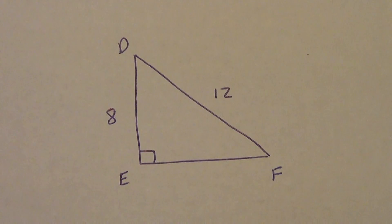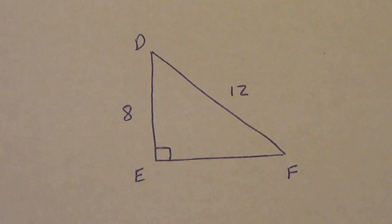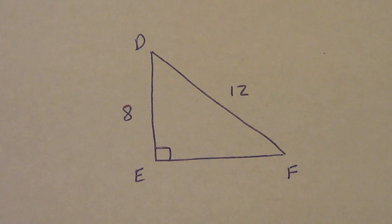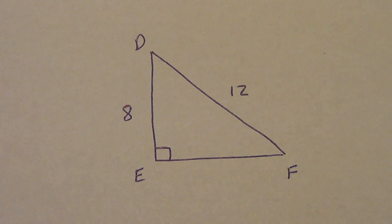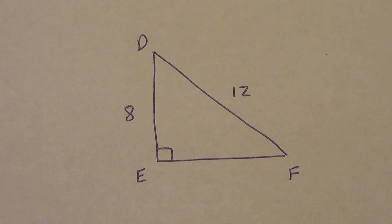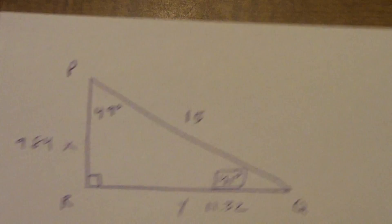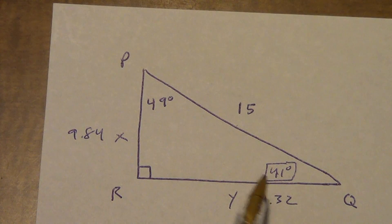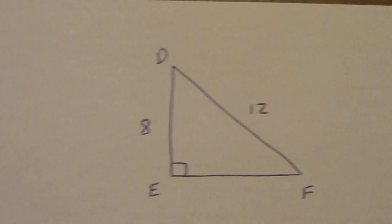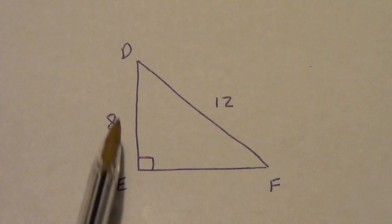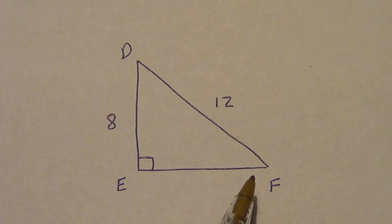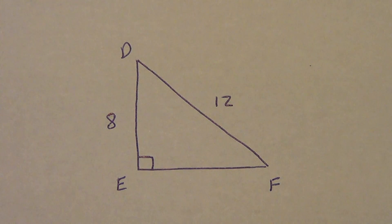Go ahead and copy down this next example, pause the video, and try it yourself. You're definitely going to be using inverse trigonometry on this one because you're trying to find the angles. Anytime you're trying to find angles and weren't given one to start with, you must use inverse trigonometry.